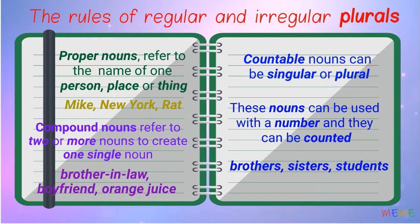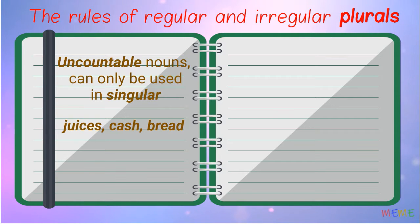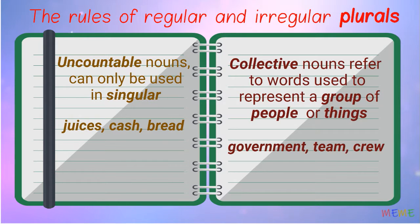Uncountable nouns can only be used in singular form. They cannot be counted. For example: juice, cash, bread. Collective nouns refer to words used to represent a group of people or things. For example: government, team, crew.